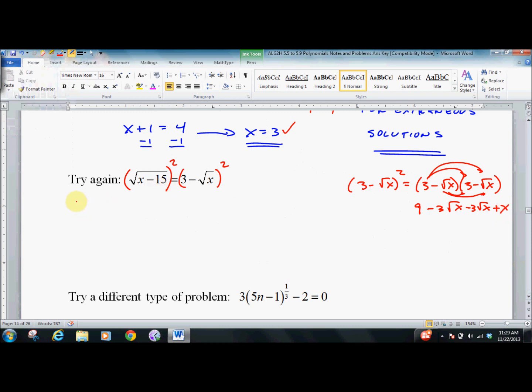Squaring the left side is easy. We get x minus 15. The right side, we get 9 minus 6 root x, I just combined them, plus x.